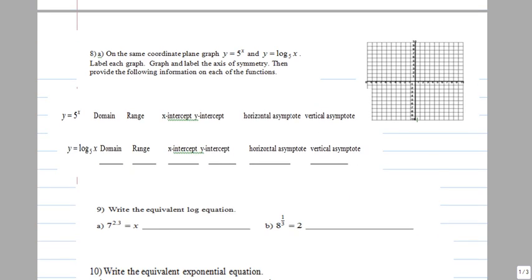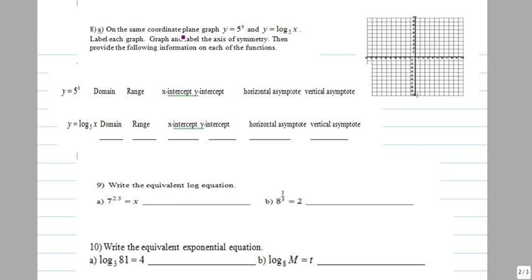On the same coordinate plane, graph y equals five to the x and log base five of x. Label each graph and the axis of symmetry. Since these two functions are inverses of each other, the axis of symmetry is the line y equals x. That's this line where x and y are equal to each other.